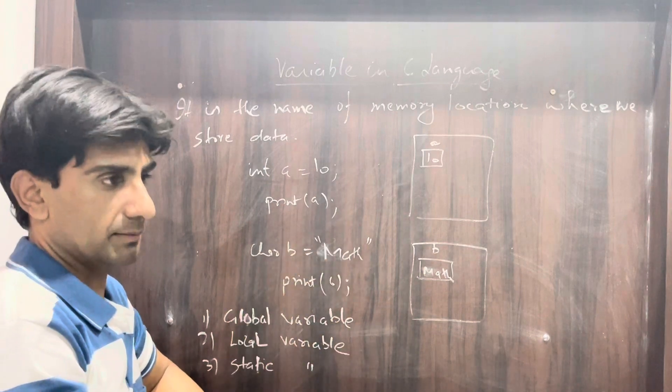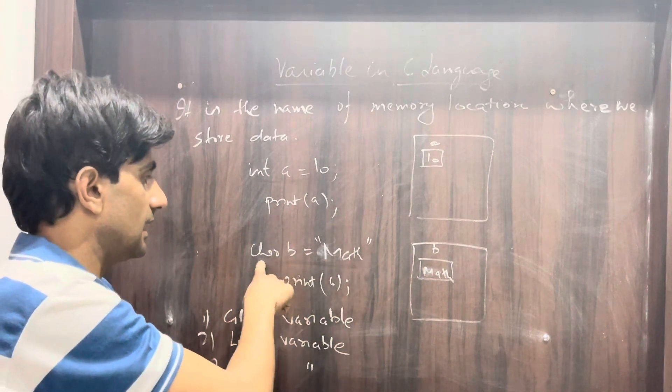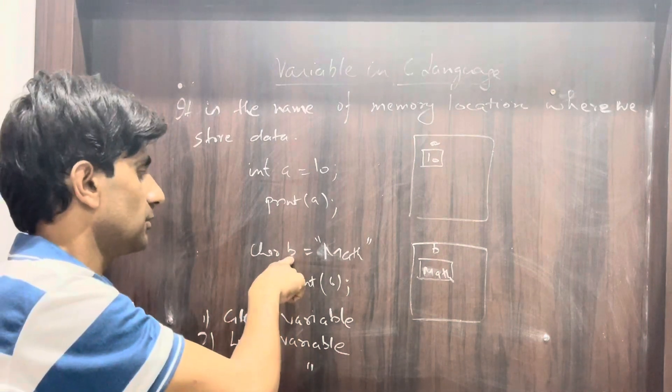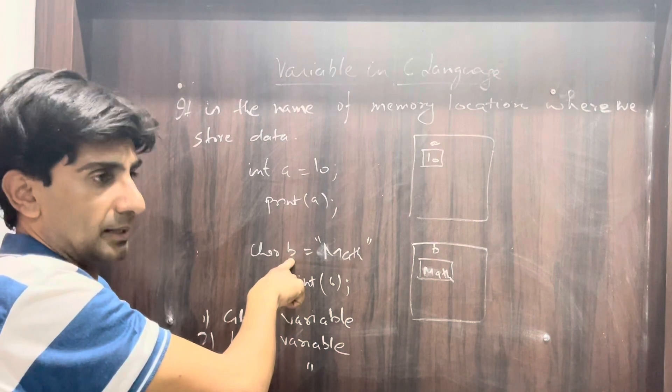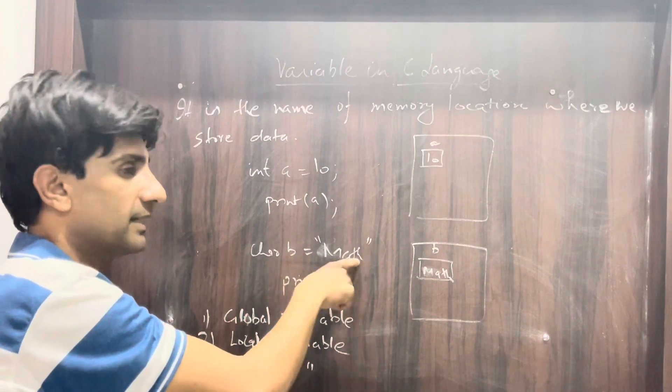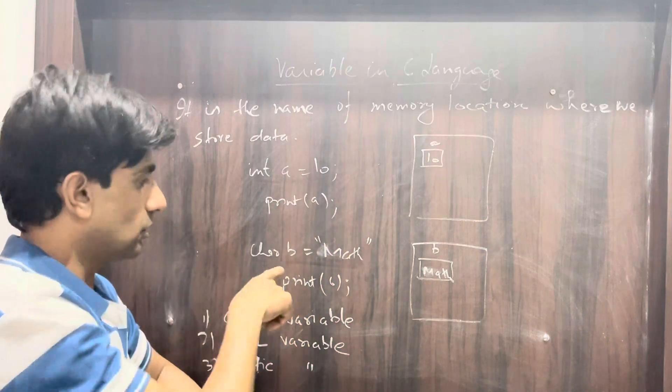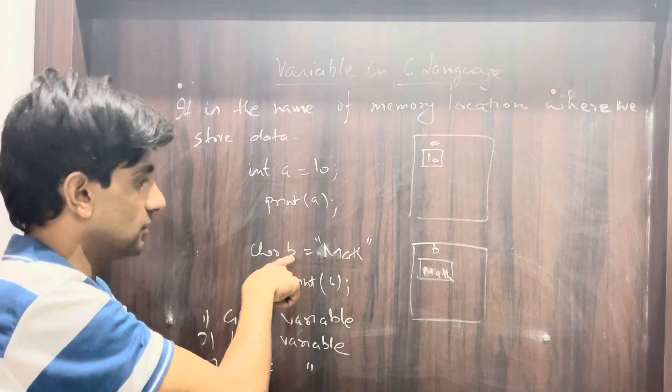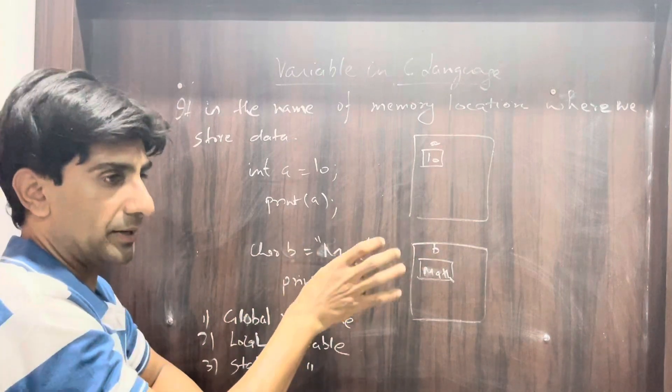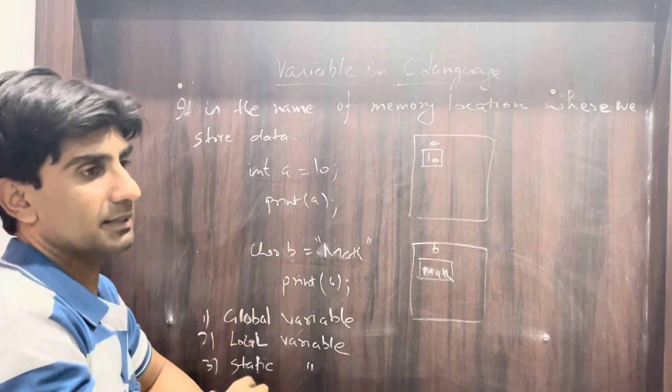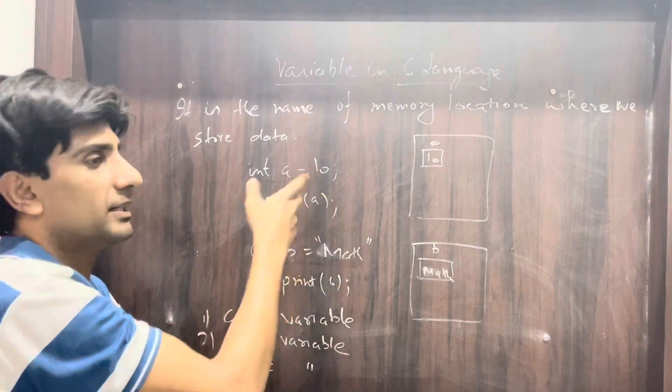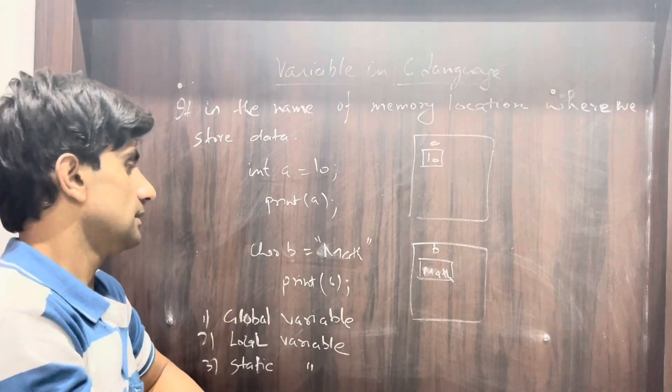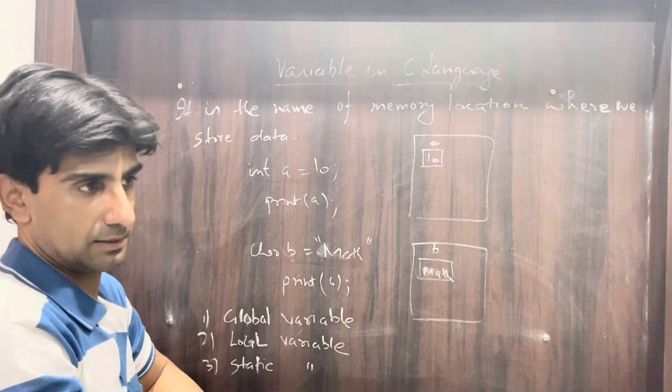When I write 'char b = math', this means that this particular variable has kept this string inside it because it is able to store characters, as it has the memory of char type. But if here I write any string like 'math', it will not store in 'a' because 'a' has the memory of integer type.